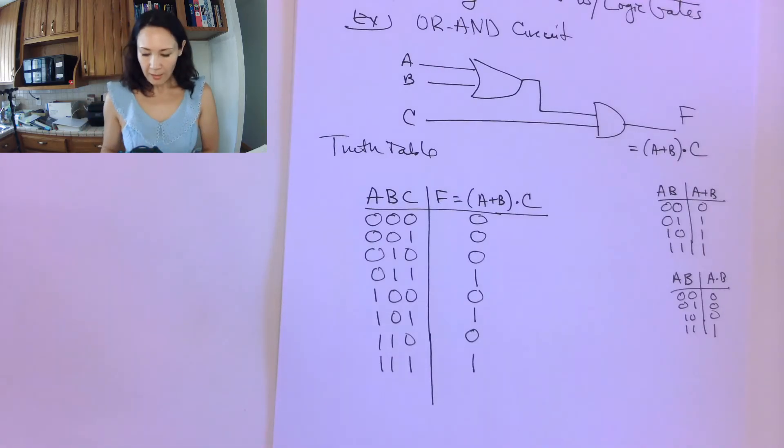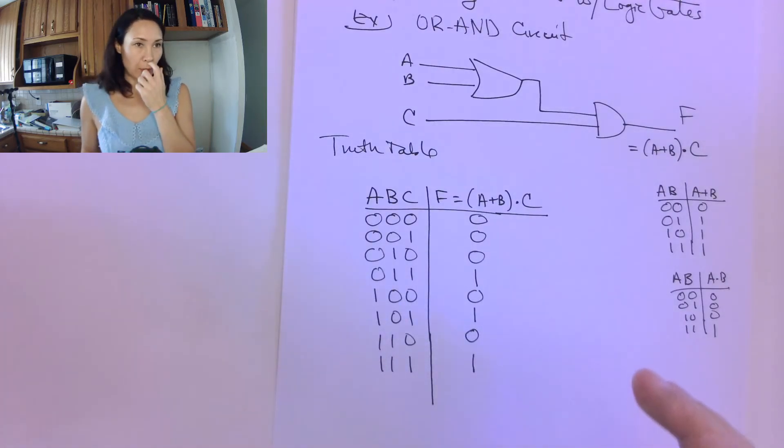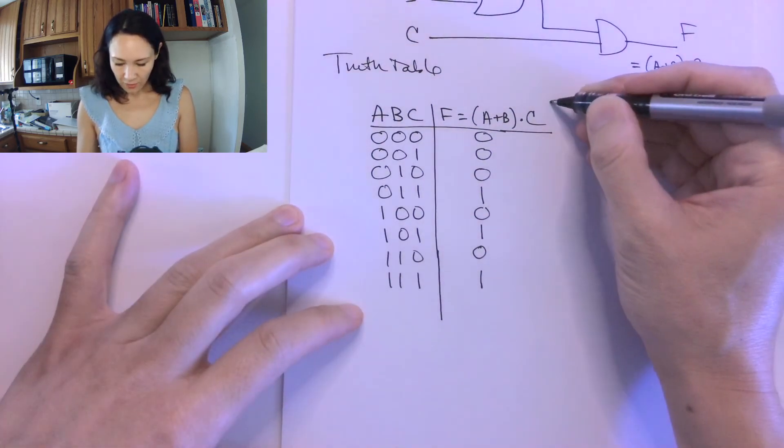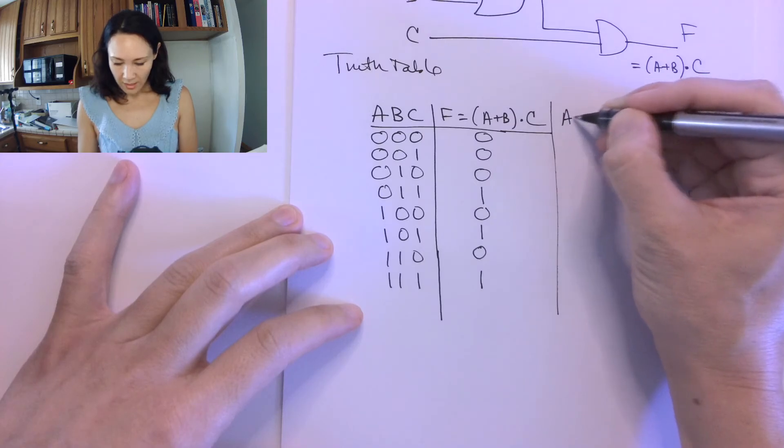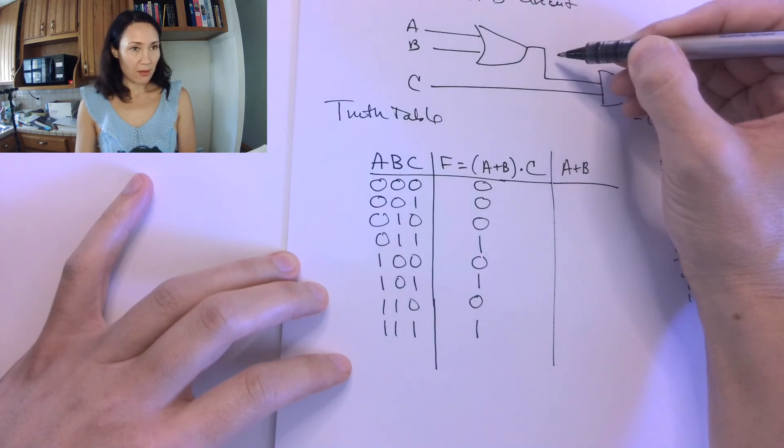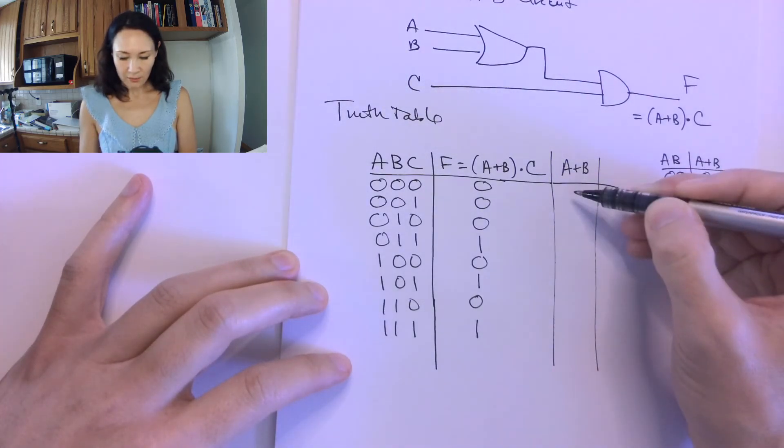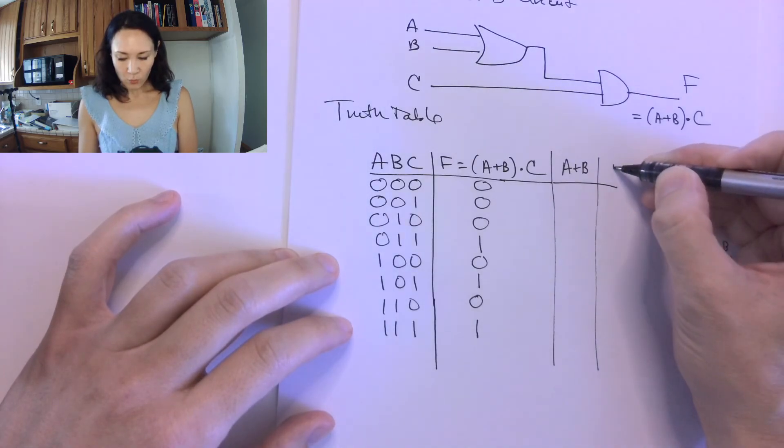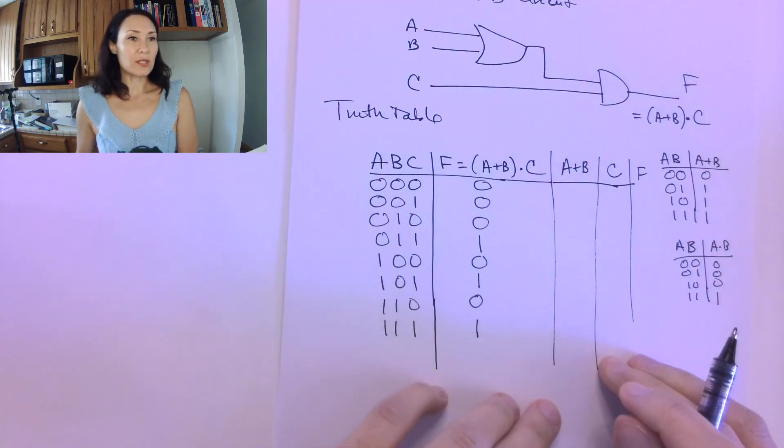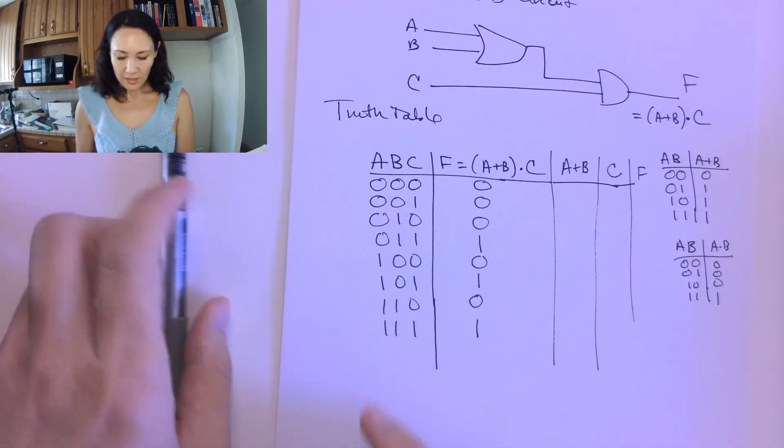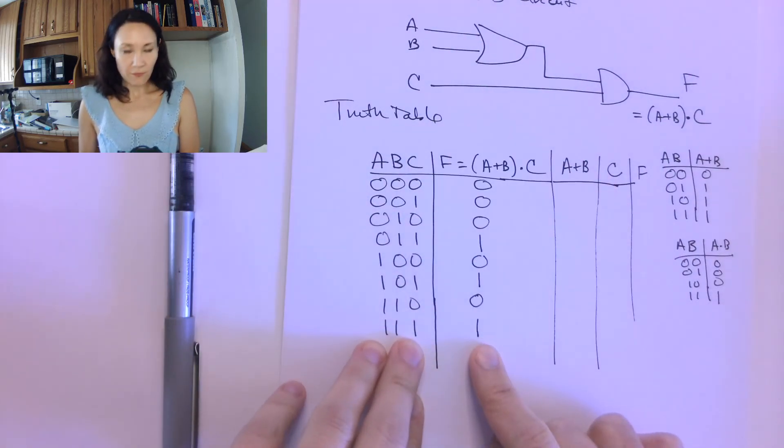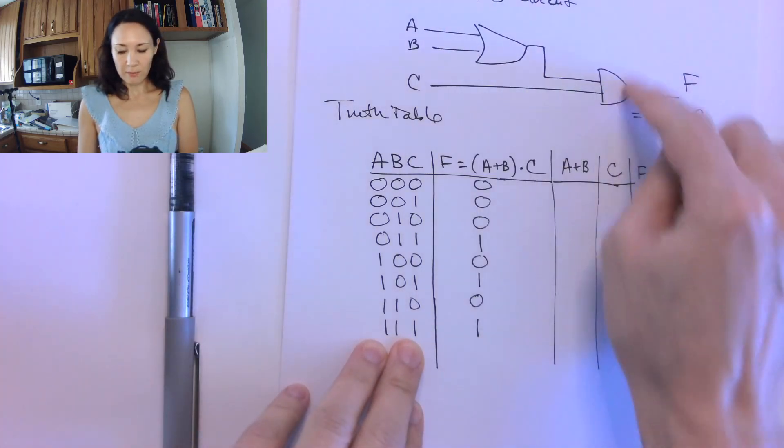So it might help when you're making your truth table if you'd like to kind of have intermediate steps. So as you're making this, if you wanted to have another column, say for A or B, and that would give you the output that is on this line right here. And then you could just take this column, whatever this happens to be, and ANDed with the input C and that would give you your F. So if you'd like to do that for yourself, that's totally fine. Your truth table just has to have all possible inputs and then the final output of your function that gets implemented by this.